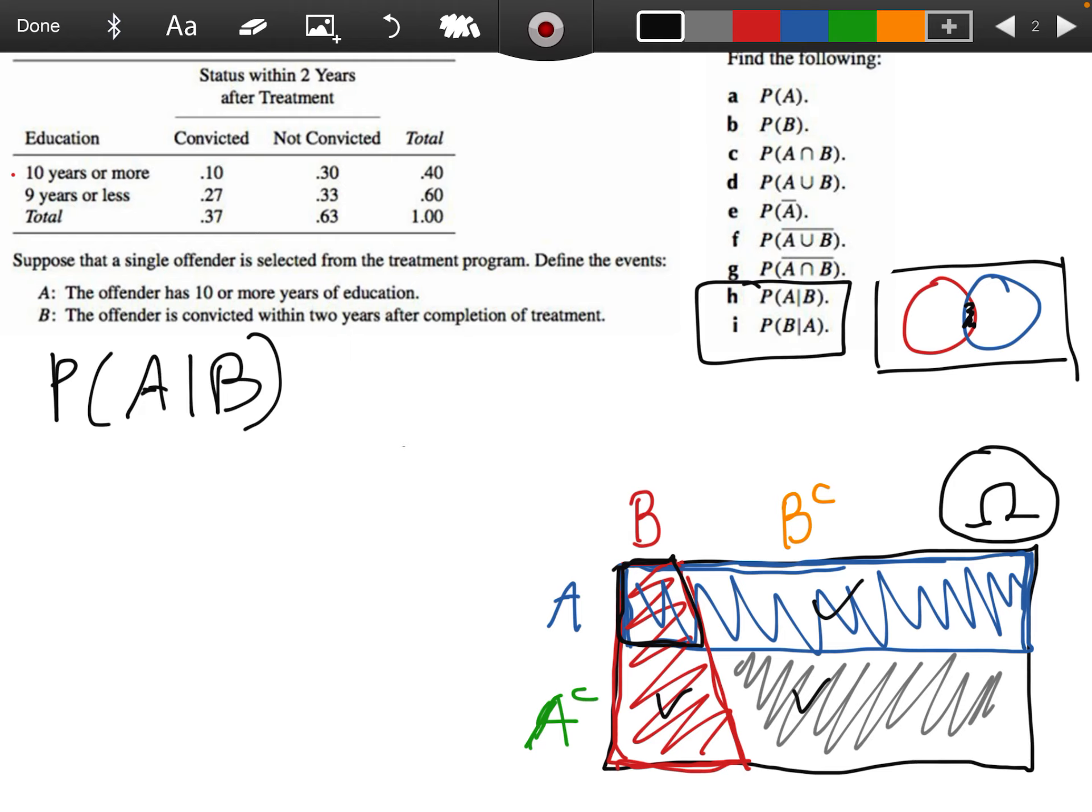Or using the simpler language, what's the probability A given B? That's the probability the offender has 10 or more years of education given that they are convicted within two years after completion of treatment. So that's the sort of weird way to put it where we're kind of working backwards in time. Suppose the end result is they wind up convicted again. What's the probability that they are someone with that educational profile?